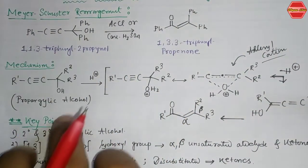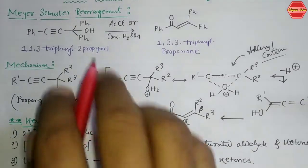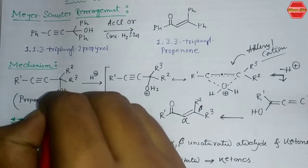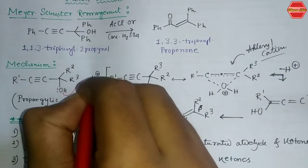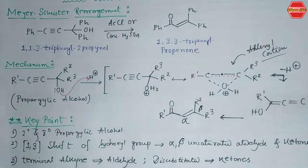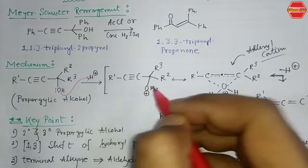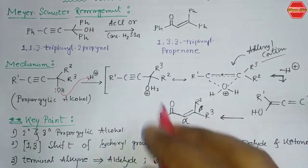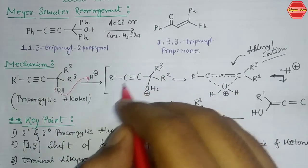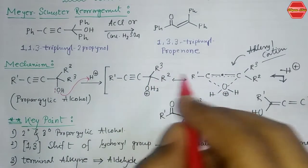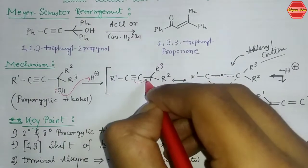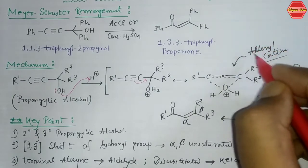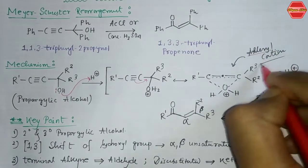If you have this kind of propargylic alcohol and you use concentrated acid as a source of H⁺, the oxygen's lone pair takes the proton from the acid source, forming –OH₂⁺. Now it can stabilize through the adjacent C≡C bond by forming an allenyl cation.